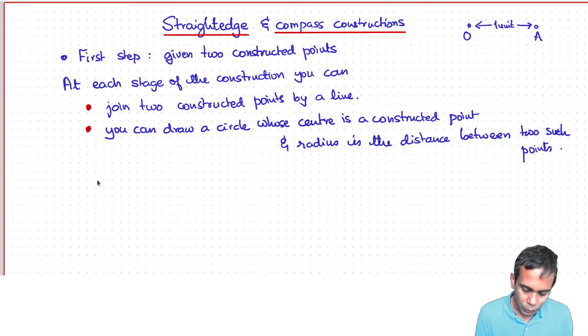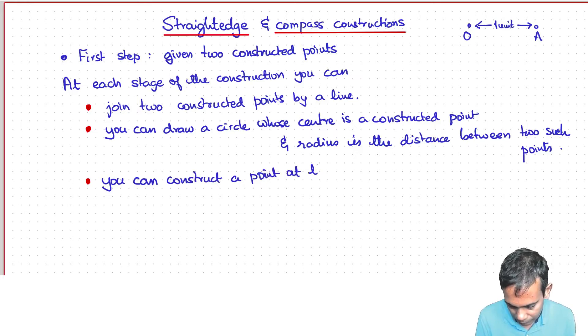And what else can you do? You can construct new points. So you can construct a point at the intersection. Well, there could be more than one intersection. So at an intersection of a constructed circle or line with another constructed circle or line.